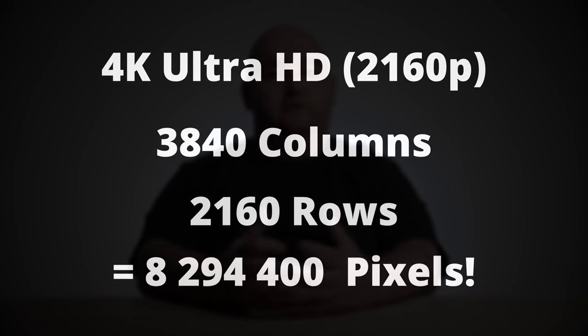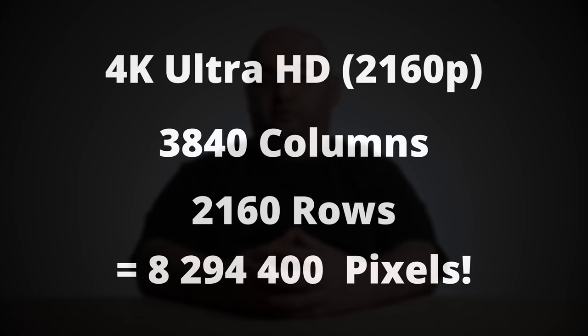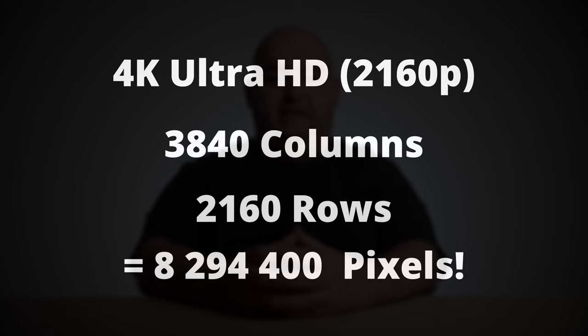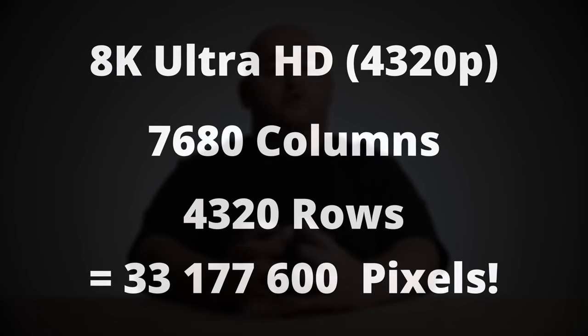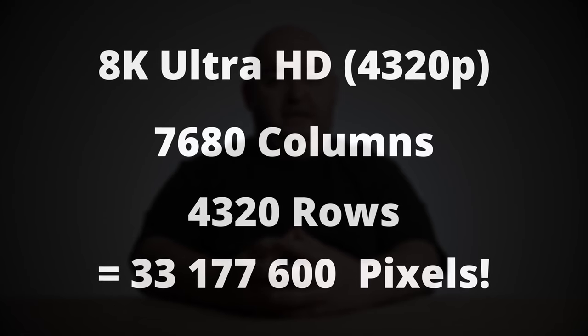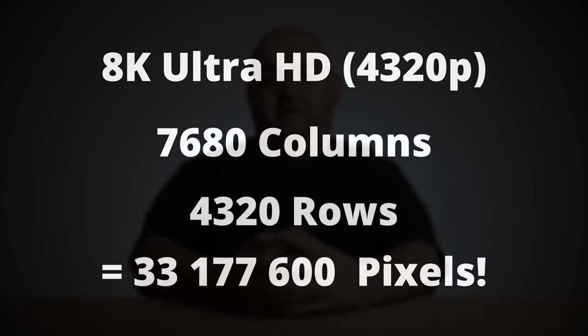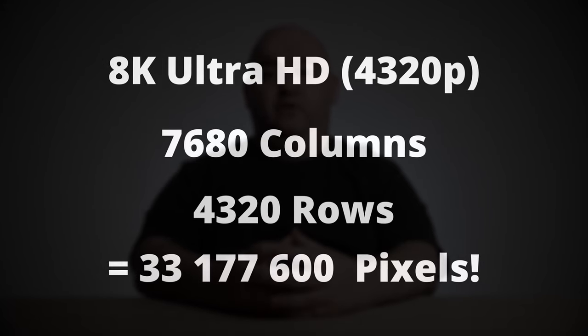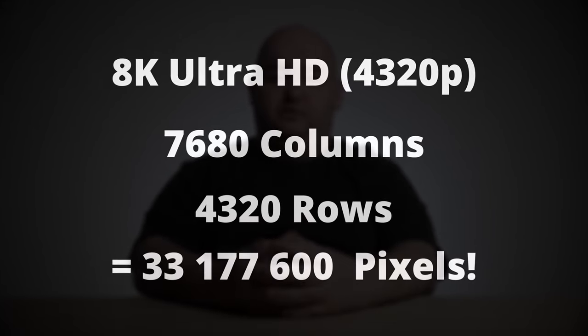Multiplying the columns by rows yields 8,294,400 pixels — exactly 4 times the number of Full HD. 8K quadruples that figure again to 7680 by 4320 for 33,177,600 pixels. That's 4 times the resolution of 4K and 16 times the resolution of Full HD. The higher the pixel count of a screen, the more fine detail you can see, assuming it has an image of the same quality to display.